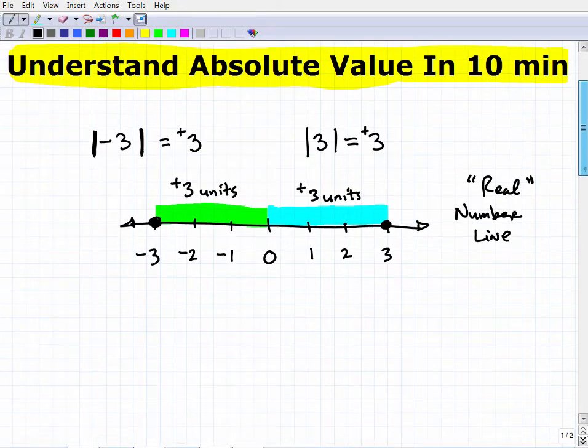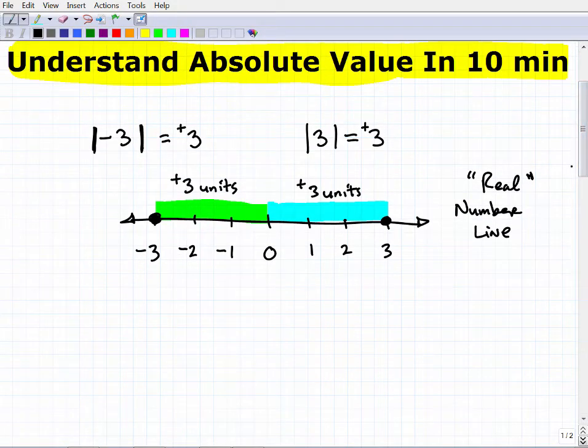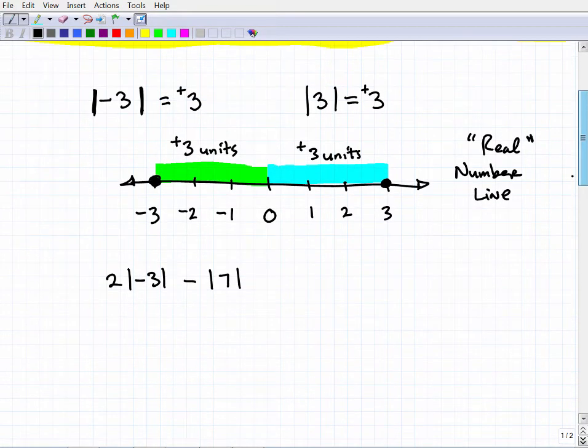So let's take a look at a couple basic type of problems. Let's say I have something like this. 2 times the absolute value of negative 3 minus the absolute value of 7. So let's do a couple little arithmetic problems. So if you want to pause the video and try this yourself, go right ahead. I'm going to go ahead and solve it now.